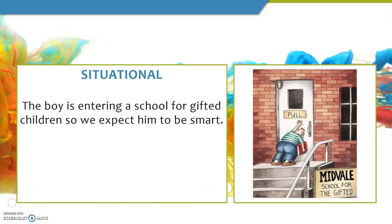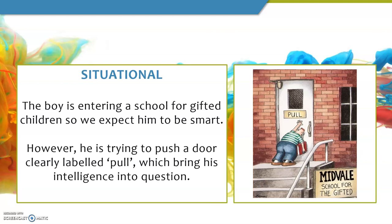In this example, the boy is entering a school for gifted children, so we expect him to be smart. However, he's trying to push a door that is very clearly labeled 'pull,' which brings his intelligence into question. We would expect a child attending a school for the gifted to be able to read a simple sign clearly on the door, and so it makes it funny. That is situational irony.